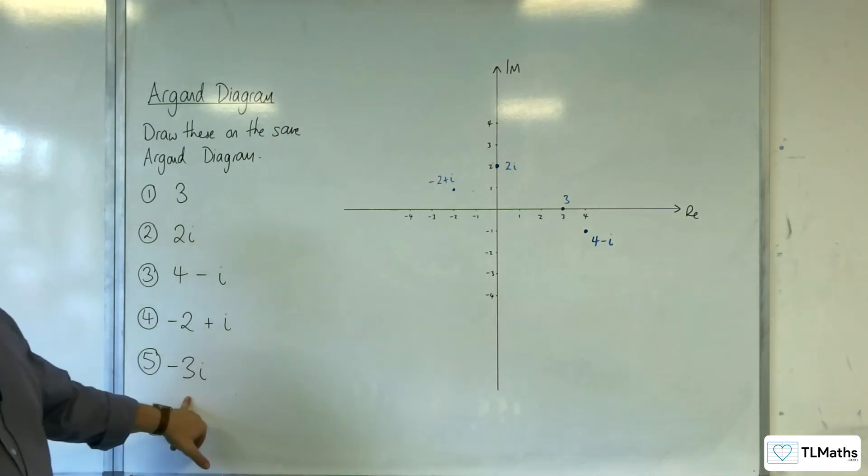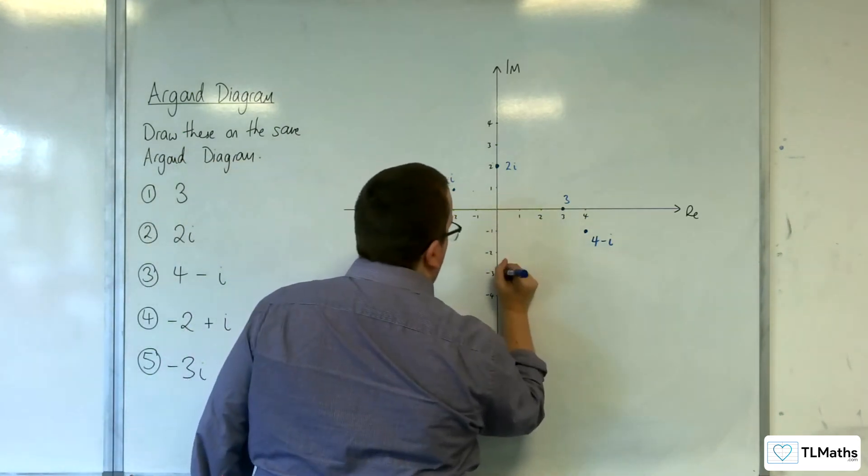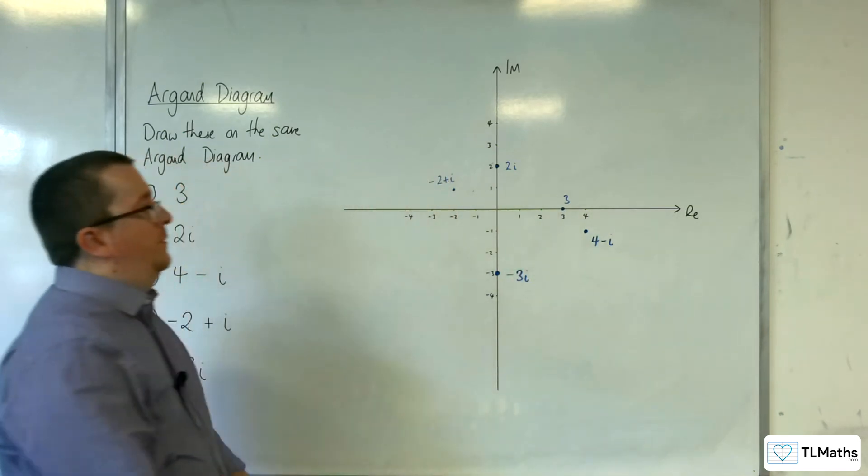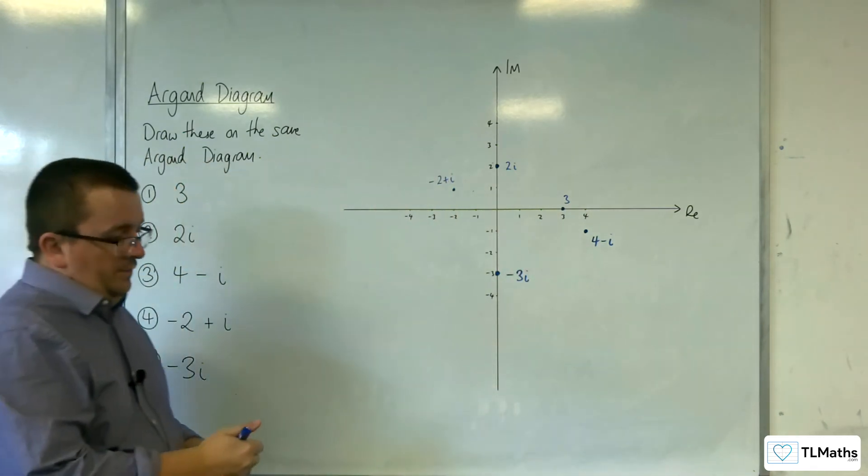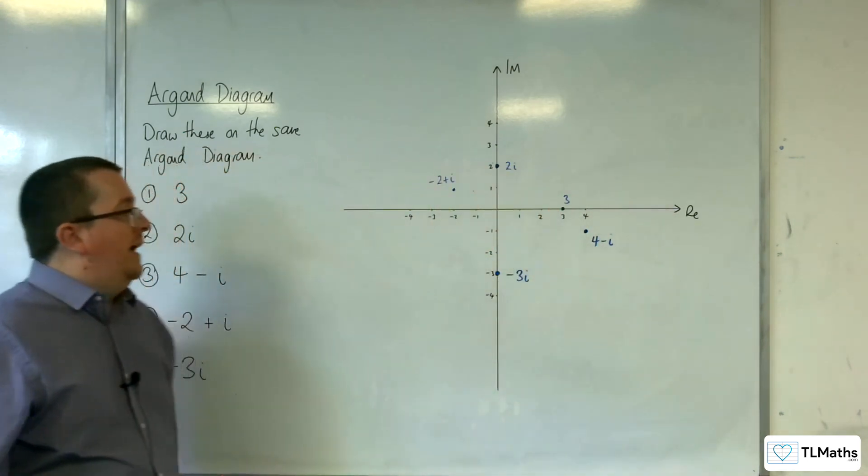And then minus three i, well that's just minus three on the imaginary axis. So that is where we can place our points on the Argand diagram.